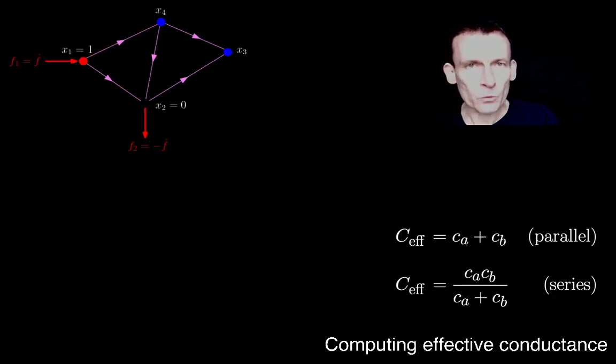Therefore, the f hat we know now, which is the net current divergent from node one, is the effective conductance. And we actually know what that number is because we've already computed it.